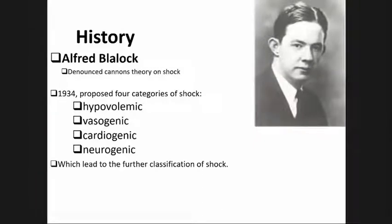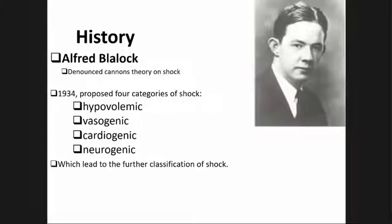Then we have Alfred Blalock. He denounced Cannon's theory on shock. Blalock documented that the shock state in hemorrhage was associated with reduced cardiac output due to volume loss, not a toxic factor. In 1934, he proposed four categories of shock: hypovolemic shock, vasogenic shock, cardiogenic shock, and neurogenic shock, which led to further classification of shock.